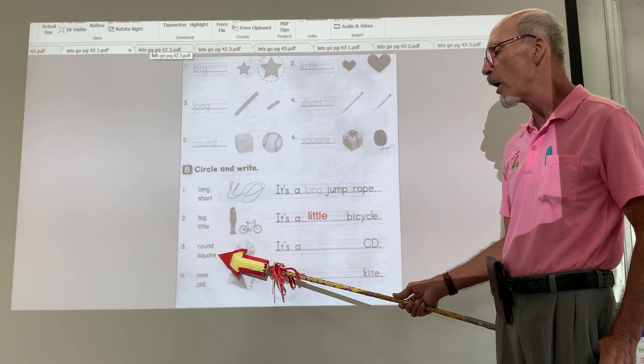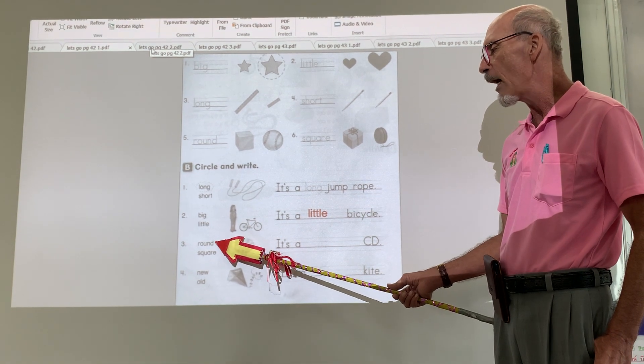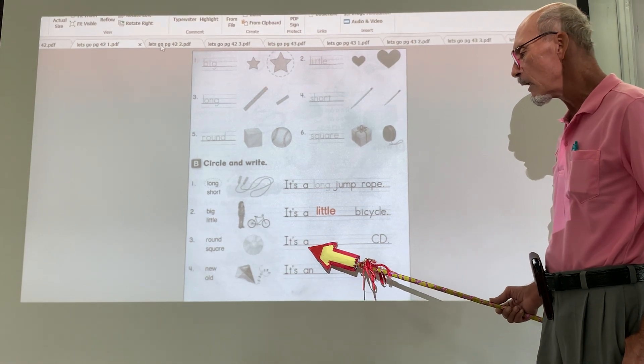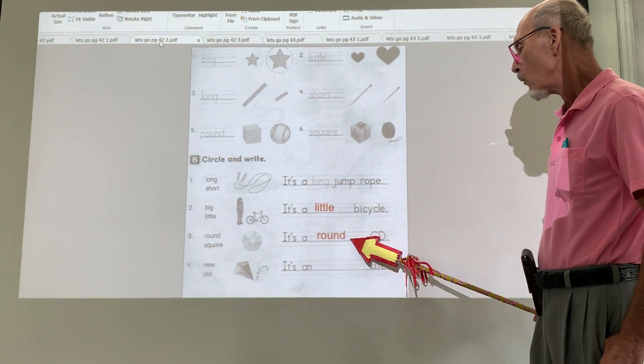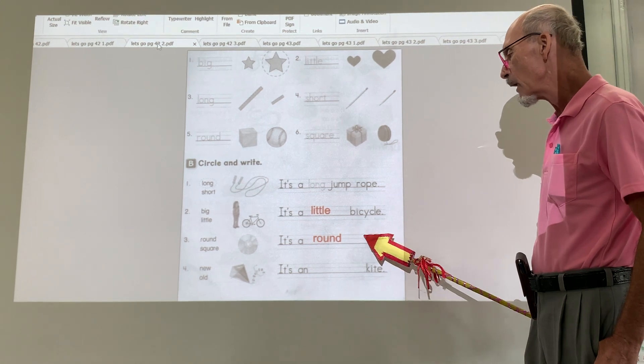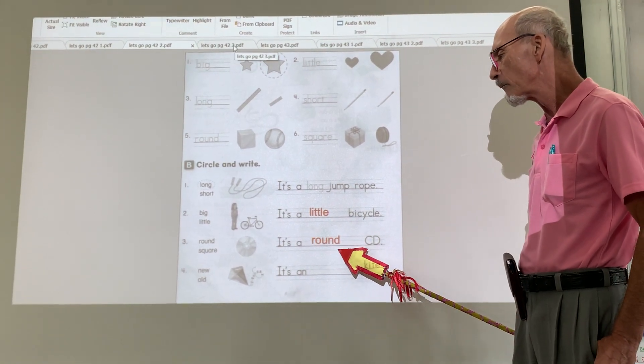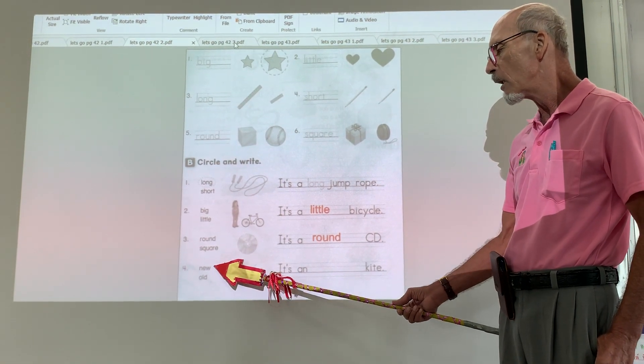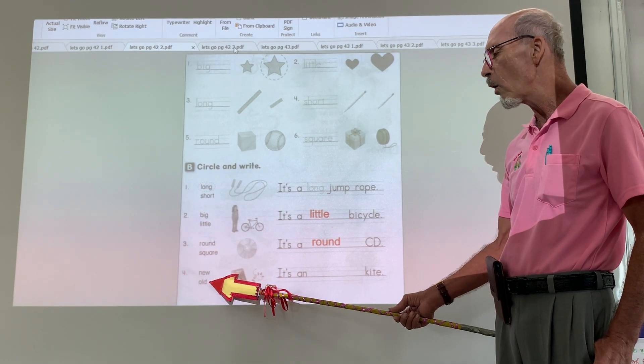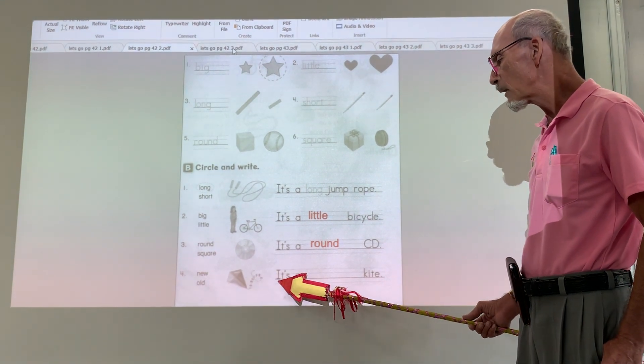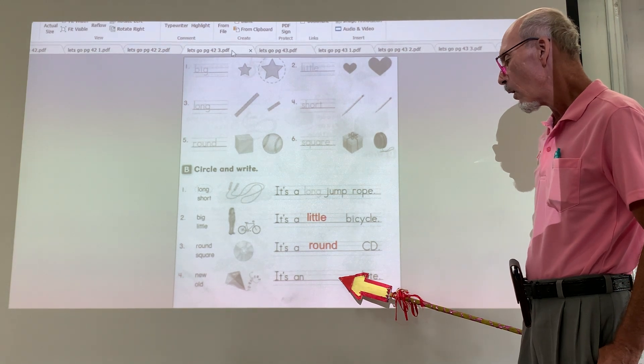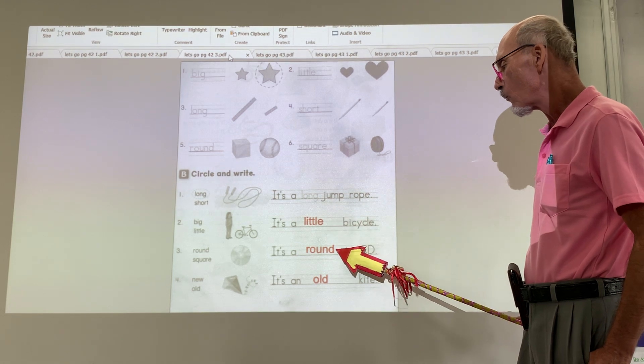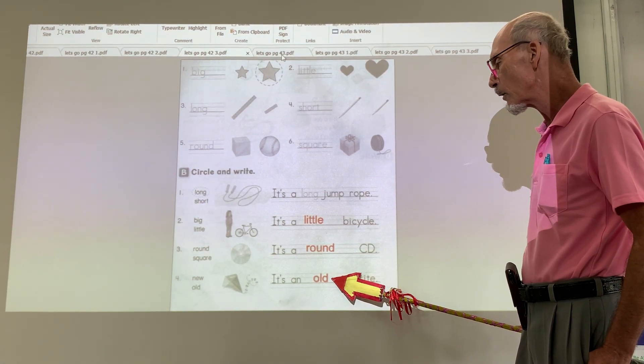Number three. Round or square. Round or square. What is this? It's a round CD. It's a round CD. And looking at this, it's a new or old. It's an old kite. Little, little, round, old. Okay?